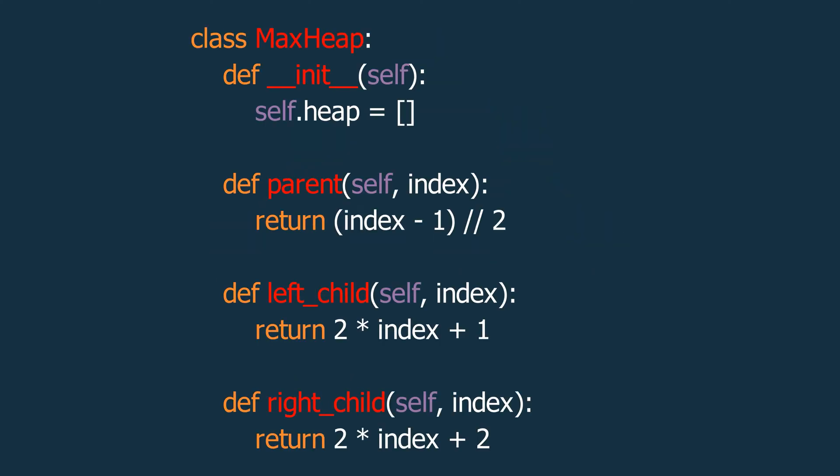Now, let's look at the Python code to implement everything we've learned so far. We'll start by defining a class called MaxHeap. Inside the constructor, we'll initialize an empty array called heap to store our elements. Next, we'll add methods to find the left and right children, as well as the parent of any element based on its index.